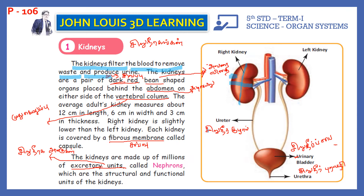The right kidney is slightly lower than the left kidney. Each kidney is covered by a fibrous membrane called a capsule.